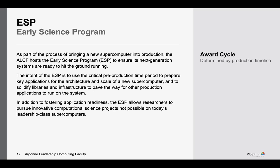Another category is our Early Science program. There is currently no open Early Science program call because this is what we run when we are deploying a new system. We have an Early Science program currently running for Aurora, and it's very similar to the Data Science program. What we're trying to do is accelerate scientific and engineering researchers' readiness for Aurora — by improving their readiness, we get to test the software and hardware, improve our understanding of these coming systems, and not start from scratch when they hit the floor.